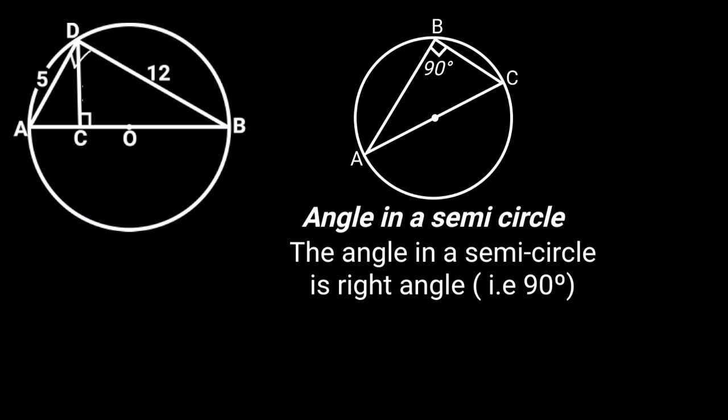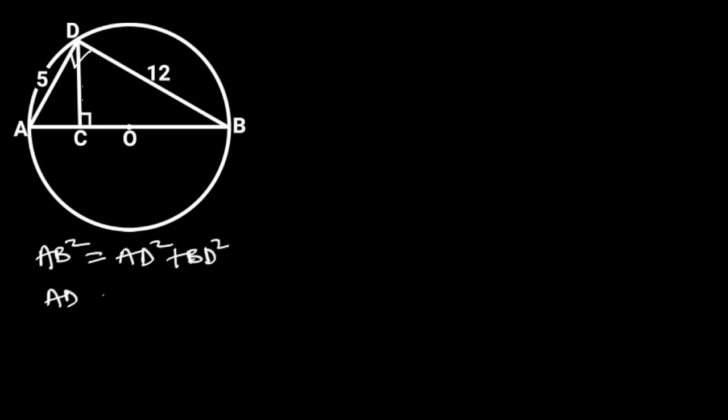Next, let's find AB using Pythagoras theorem. From Pythagoras theorem, AB squared is equal to AD squared plus BD squared. AD is equal to 5 units, BD is equal to 12 units. If we substitute these values in the formula, we will have AB squared is equal to 5 squared plus 12 squared. 5 squared is equal to 25.